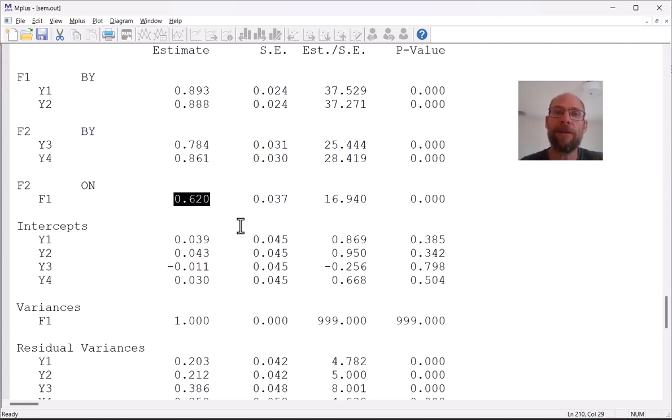Now if you had more predictor variables of f2 then this coefficient could no longer be interpreted as a correlation if your other predictor variables are correlated with one another. And so this is only because this is just a bivariate regression and therefore we can interpret this coefficient here as a correlation coefficient.